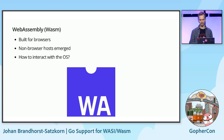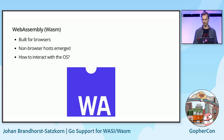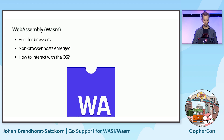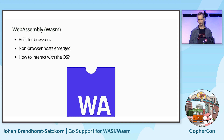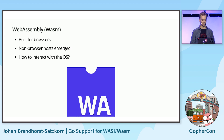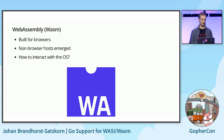WebAssembly started as a project to bring a safe, simple, and fast way to run code compiled to bytecode in the web browser. Soon after standardization, however, some started experimenting with building non-browser runtimes, such as WASMtime. It turns out a lot of people were interested in a new compute architecture with properties like those of WebAssembly. These new hosts allowed execution of WASM bytecode anywhere you could execute the host, but without a syscall API, it wasn't possible to do things like opening files or getting the current time — in other words, there was no way to interact with the underlying operating system.